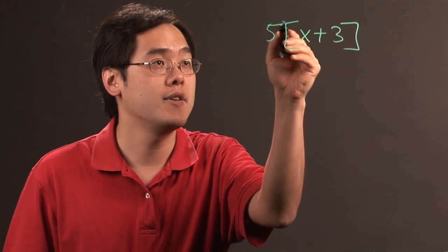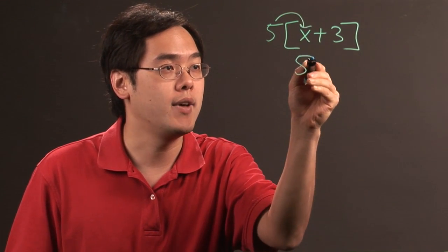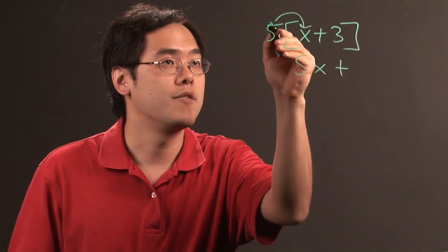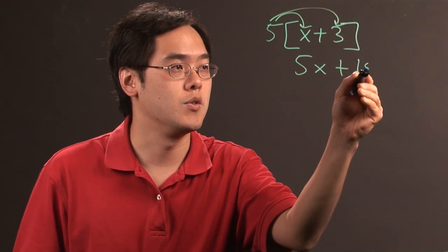So if you have 5 times x, that's going to give you 5x, plus 5 times 3, that's going to give you 15.